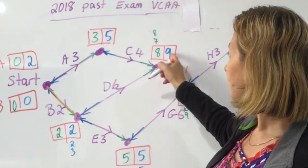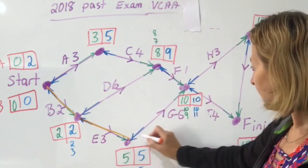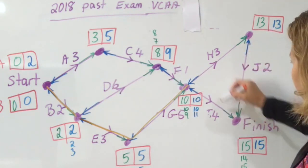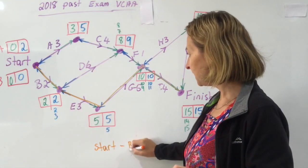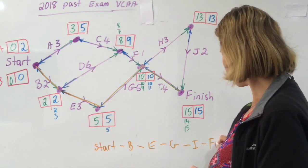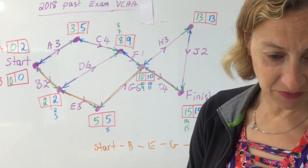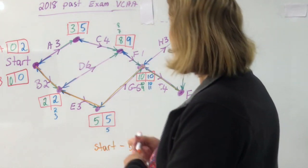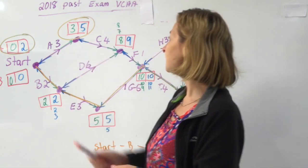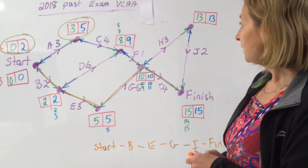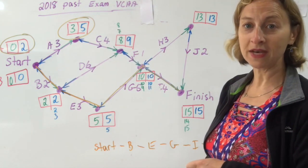Don't say 15, because that's when activity I is finished — it takes four hours, so the earliest starting time is after 10 hours. For Part B, the critical path is any path with no float time. Starting here, I can only go to B. From B I can't go up to C or along D because D has a float time, so I come down. My critical path is: Start — B — E — G — I — Finish. For Part C, two activities have a float time of two hours: those are A and C. Be careful — activity F has a float time of only one, not two.